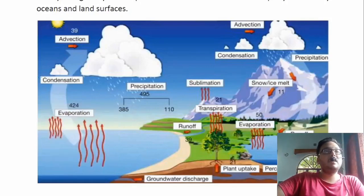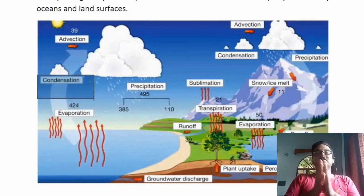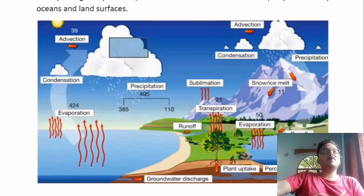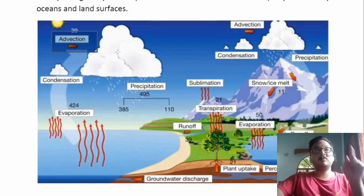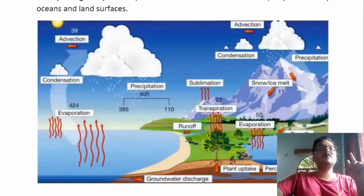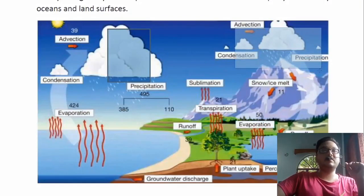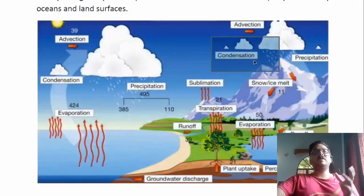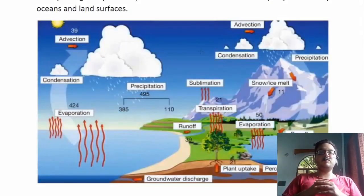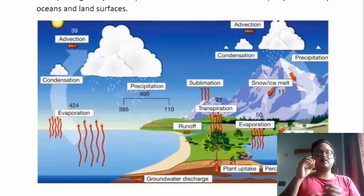This water from the ocean gets evaporated to the atmosphere, and condensation takes place where the evaporated vapor comes back to its original liquid state, forming clouds. There is one process known as advection — the transport of bulk material. In our hydrological cycle, advection means the transport of clouds from one place to another, such as clouds formed over the ocean being transported near mountains. Condensation also takes place over land areas wherever evaporation occurs.